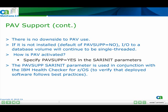There is no downside to PAV use. If it is not installed, the default of PAVSUPP equals no means I/O to a database volume will continue to be single-threaded. PAV is activated by specifying PAVSUPP equals yes in the SAR init parameters. The PAVSUPP SAR init parameter is used in conjunction with the IBM Health Checker for ZOS to verify that deployed software follows best practices.